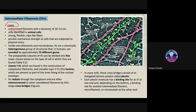Intermediate filaments have a diameter of 10 to 12 nanometers, which is almost half the diameter of microtubules. They are present only in animal cells and are strong, flexible, rope-like fibers that provide mechanical strength to the cell.